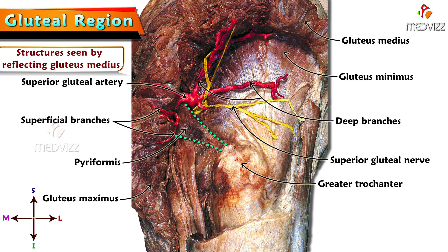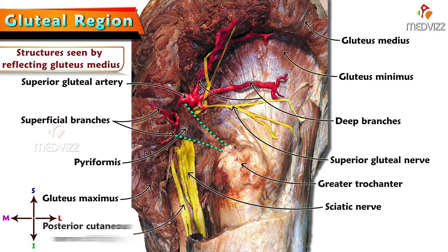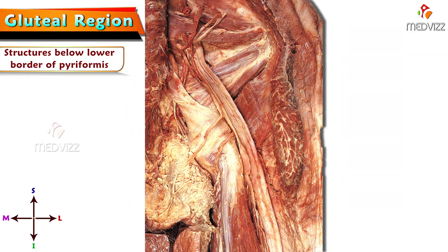The structures appreciated below the lower border of the piriformis are the sciatic nerve and the posterior cutaneous nerve of thigh, which runs along with the sciatic nerve. This image demonstrates the structures below the lower border of piriformis.